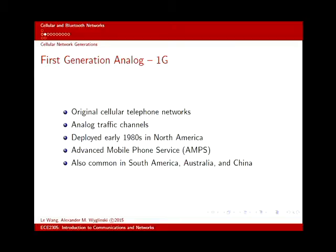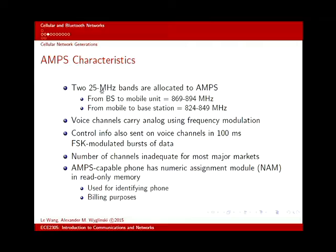The standard that described 1G was called the Advanced Mobile Phone Service, or AMPS. It used 25 MHz bands and carried voice, but embedded in the voice were 100-millisecond bursts of data encoded in FSK. This control data set up channels for users. Inside an AMPS-capable phone there's something called a Numeric Assignment Module, or NAM.